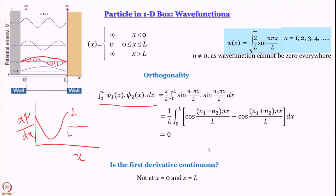The first derivative is not continuous at x equal to 0 and x equal to L, but that is not such a stringent condition on a wave function. We have normalized the wave functions — that is how we got the root 2 by L factor — and established they are orthogonal to each other. Since only certain wave functions are allowed, only certain energies will be allowed as well.